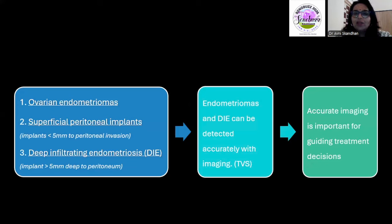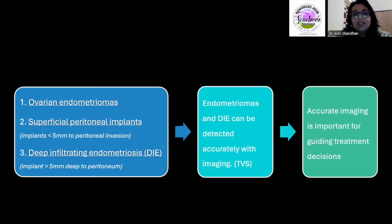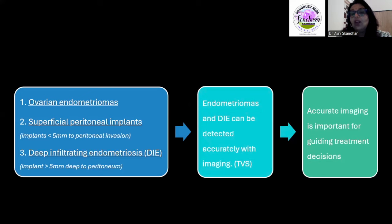Ovarian endometriomas are something we routinely pick up. Because endometriosis is such a common pathology encountered these days, ovarian endometriomas are found very often. Superficial peritoneal implants are very small — less than 5 millimeters — and are very difficult to pick up. Deep infiltrating endometriosis is under-reported on ultrasound; it is most often reported on MRI, but these deposits are more than 5 millimeters and can actually be beautifully picked up on an ultrasound scan.